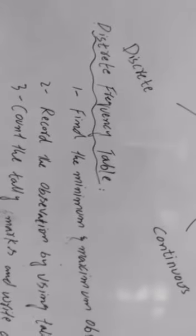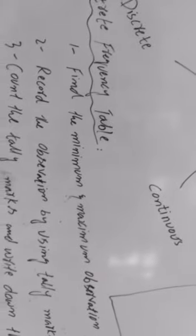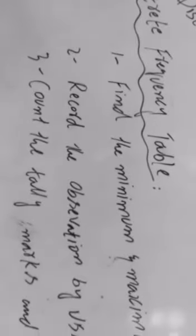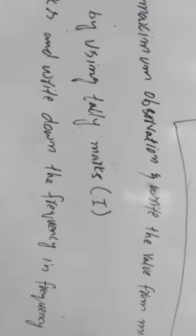For discrete frequency distribution, we have an example. First, we find the minimum and maximum observations. Second, we record each observation using tally marks. Here is example data: 3, 4, 2, 3, 3, 5, 2, 2, 2, 1, 2, 1, 4, 2, 2, 3, 3, 4, 2. A coin is tossed 20 times and the number of heads is recorded.